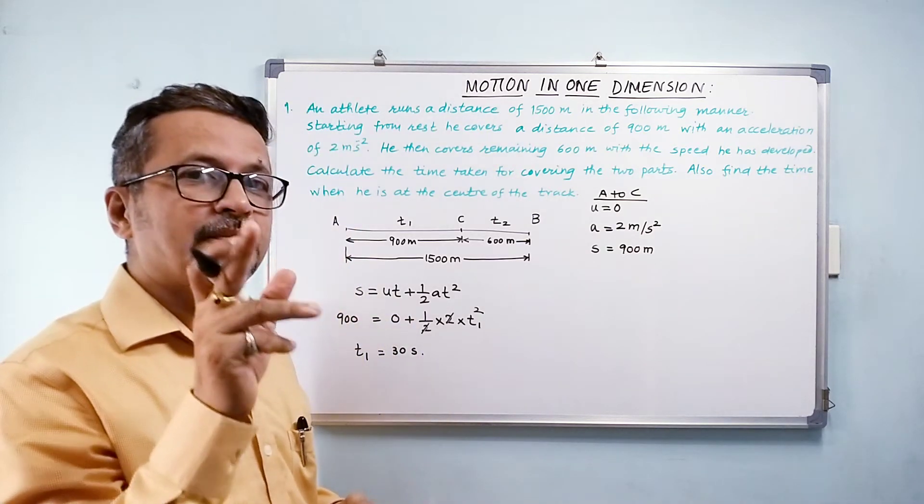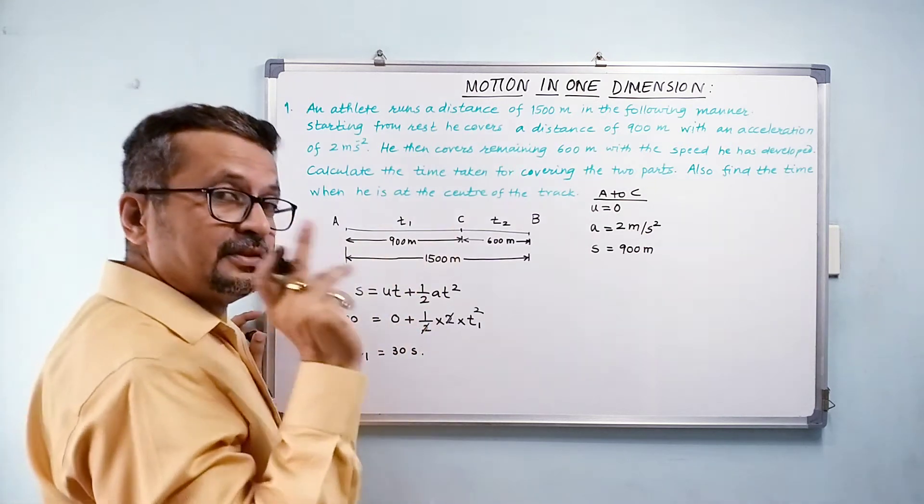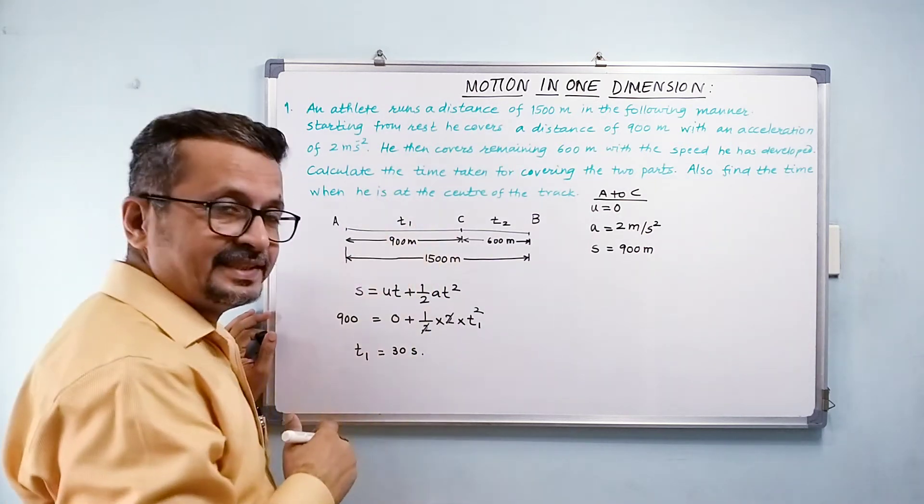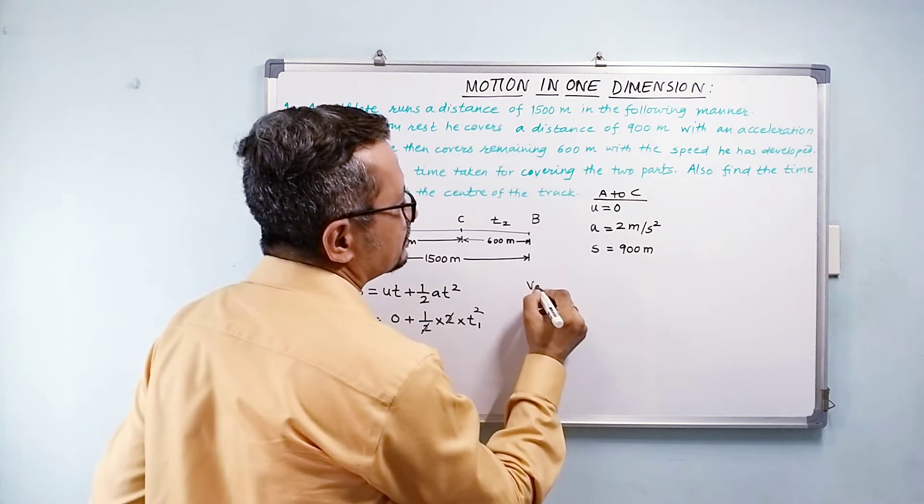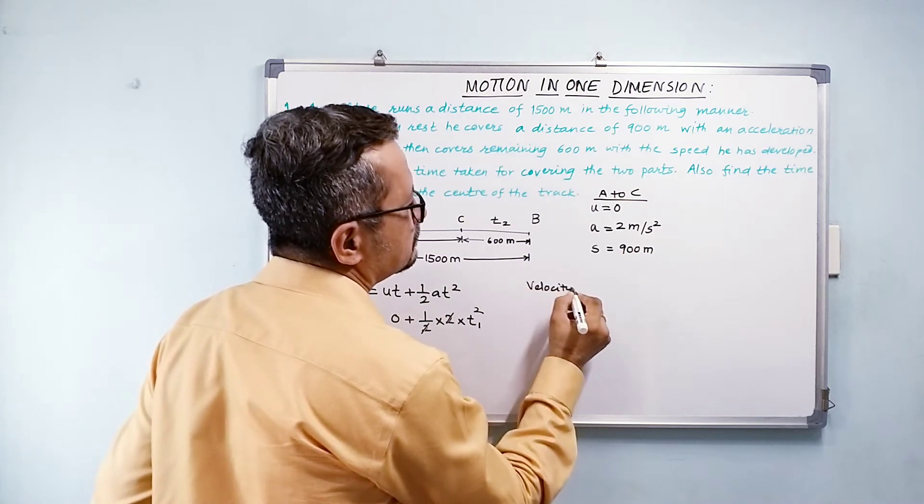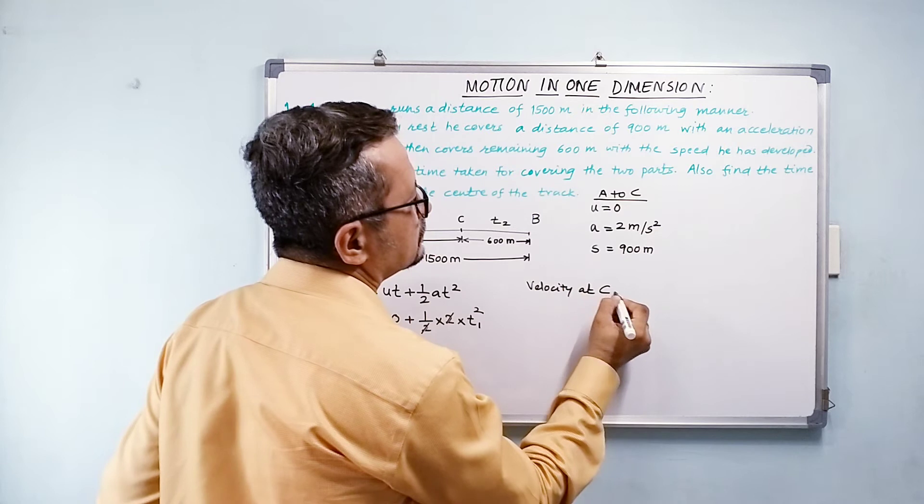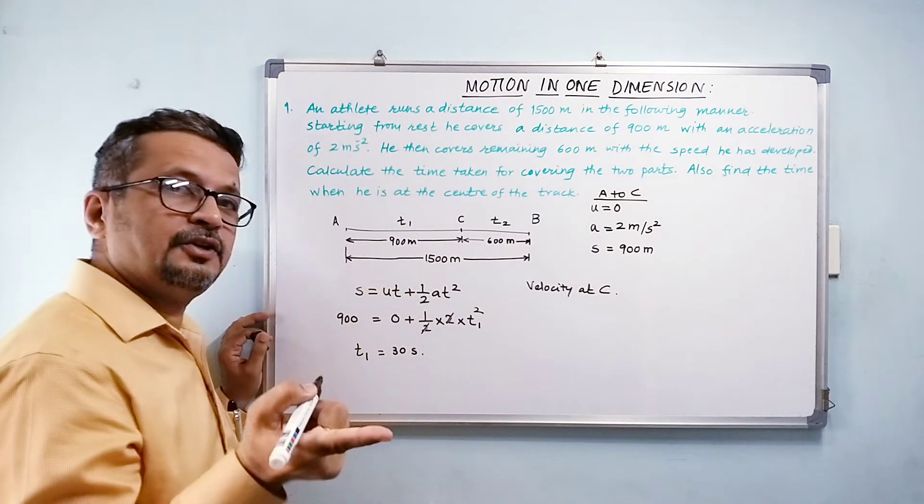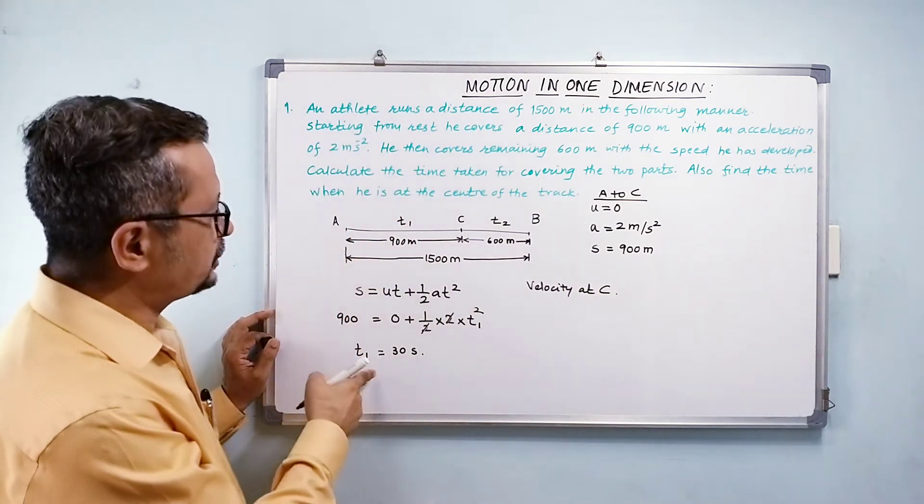I need to find out my velocity. So the velocity attained at point C, velocity at C. Now for that I can use the first kinematical equation because I know the time here.